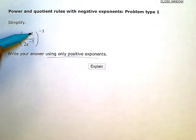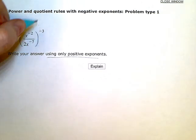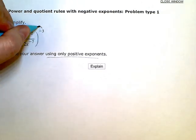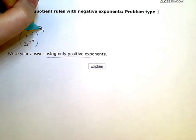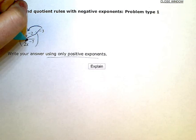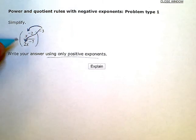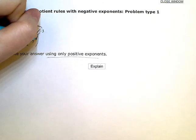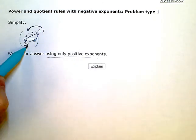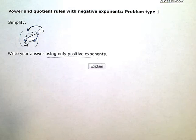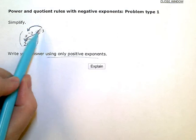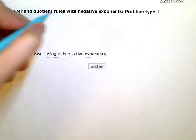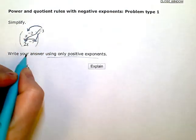The power to a power rule says that I can take this exponent and multiply it by every factor on the inside of the parentheses — so times the x, times the 2, and times this x to the negative 7th. So x to the negative 2 raised to the negative 3 means I do negative 3 times negative 2, and that gives me x to the positive 6.